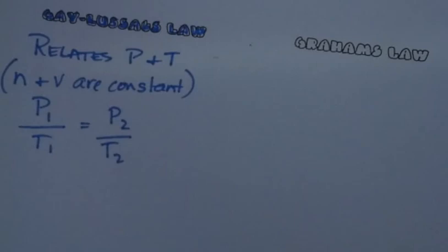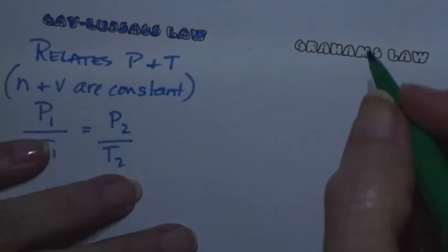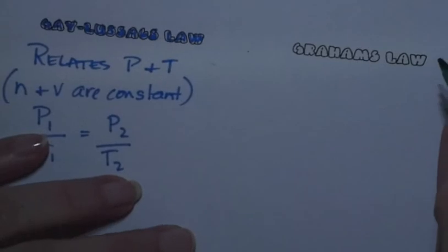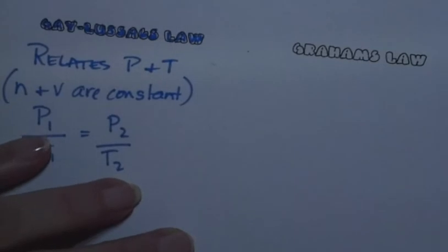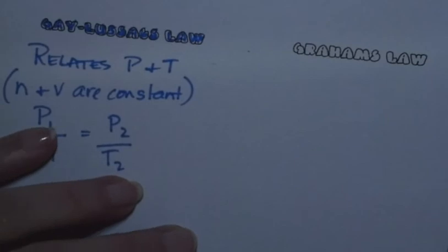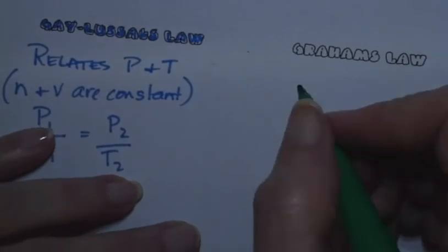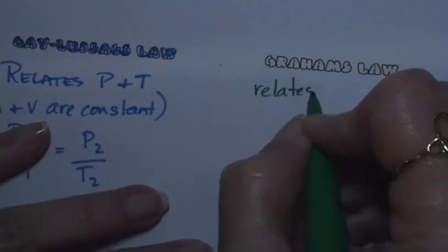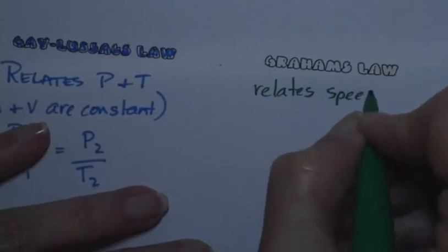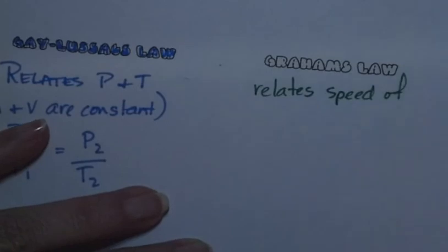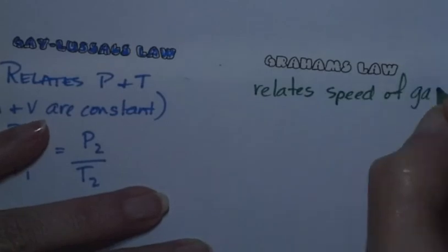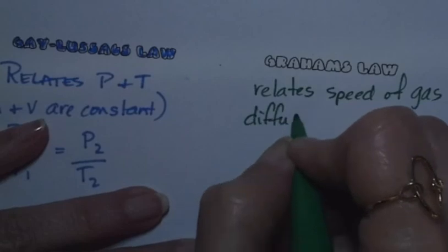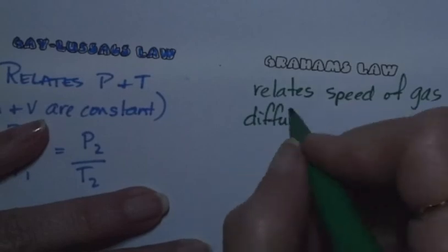The next one is Graham's law, and it's pretty interesting. This is about how fast gas molecules move — it relates the speed of gas diffusion to its molar mass.